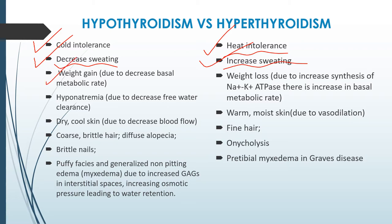There is weight gain in the case of hypothyroidism, and this is basically due to decreased metabolic rate. Whereas in the case of hyperthyroidism, there is weight loss, and this is due to increased synthesis of Na+/K+ ATPase, which causes an increase in basal metabolic rate.